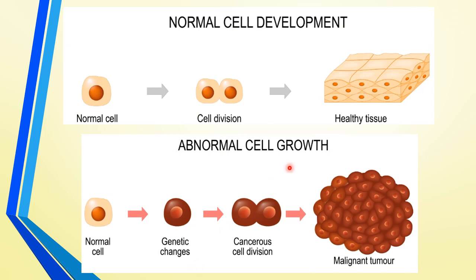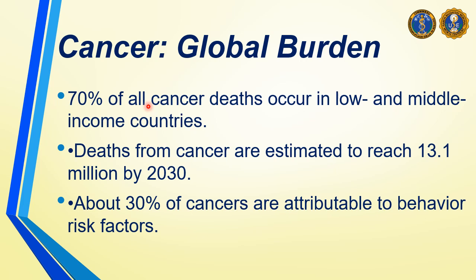The last of our main NCDs is cancer. In this disease, abnormal cells grow uncontrollably and go beyond their usual boundaries to invade other parts of the body through an interplay of genetic changes. Most cancer deaths occur in low- to middle-income countries due to economic problems, and these deaths are estimated to reach 13 million by 2030. About 30% of these cancers are attributable to behavioral or lifestyle risk factors.